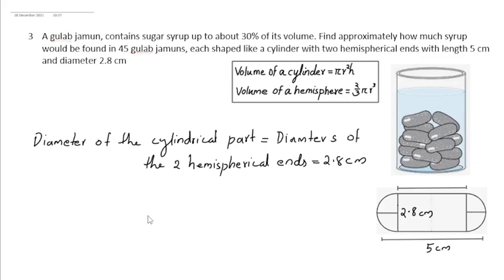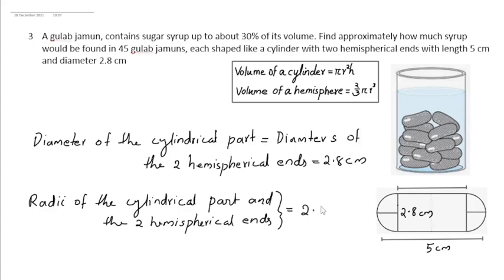The radii of the cylindrical part and the hemispherical ends are 2.8 by 2, which is equal to 1.4 cm.